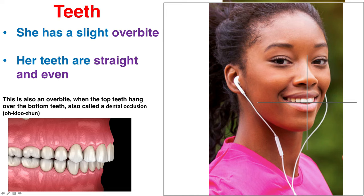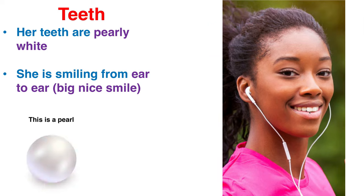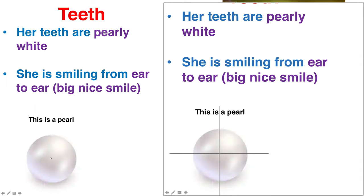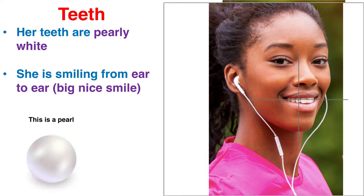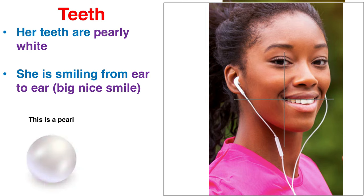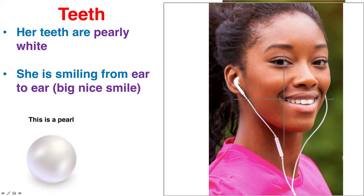You could also describe her teeth as being straight — they point down towards the ground — and even, meaning the bottoms of the teeth are about where they're supposed to be. She's got nice, straight, even teeth that are pearly white — very white teeth. A pearl is a very white object, so she has a pearly white smile, or you can see her pearly whites. Another detail you could add is that she's smiling from ear to ear, meaning she has a nice big smile.